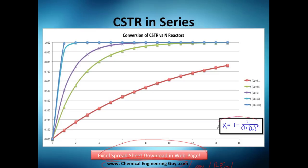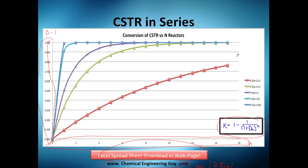In the spreadsheet, conversion goes from 0 to 1 on one axis, and the number of reactors is on the other axis. I used different Damköhler numbers, not just different numbers of reactors. For example, Da = 0.1 is one curve and Da = 0.5 is the green one.